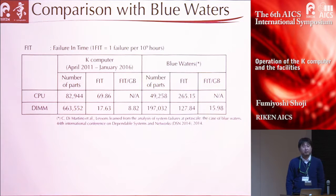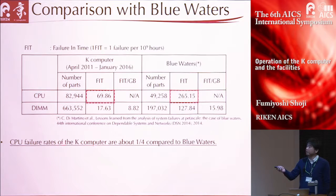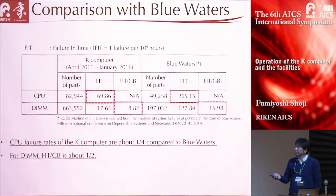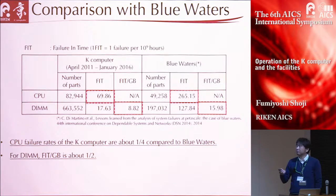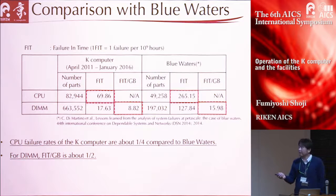Let me compare the failure rate with other supercomputers. I found Blue Waters results from a paper. For CPUs, the K-computer CPU failure rate is about a quarter compared to Blue Waters. For DIMM modules, since the two systems have different capacities we must normalize by capacity, and the K-computer failure rate is about half that of Blue Waters.